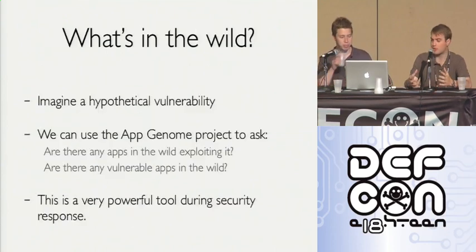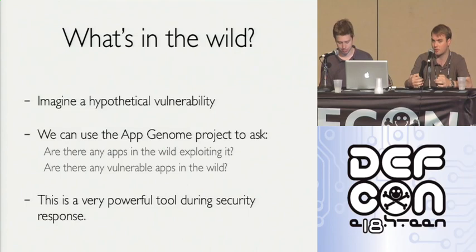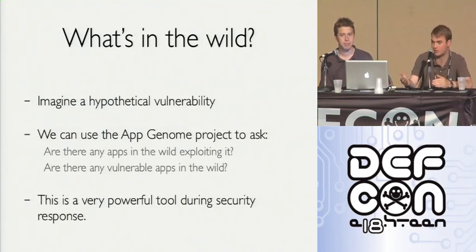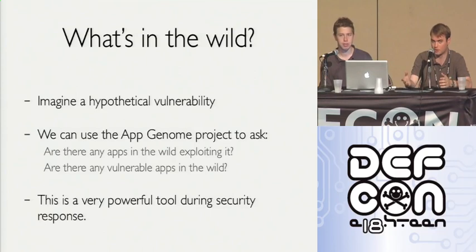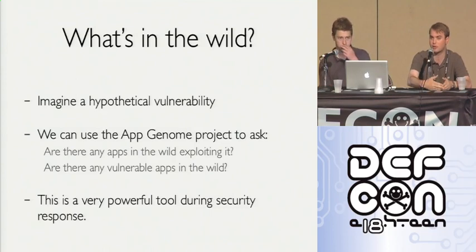Just imagine what's in the wild. The power of this project is: we have a vulnerability, and we now have the ability to ask a question about all the apps in the marketplace and say, is this code or capability existent elsewhere? We saw one wallpaper app with 50,000 downloads, and because of the App Genome Project we were able to find 76-plus apps in total with between 1.1 and 4.6 million downloads. This is going to be the beginning of some really advanced new security response tools. If you ask how you'd know how many applications on Windows are vulnerable to a given vulnerability, it's almost impossible — this changes that.